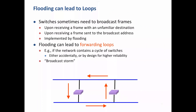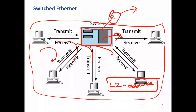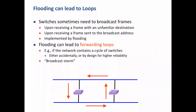When a destination node is not known, the switch is in a learning phase. If machine A is sending to C and the switch doesn't know where C is connected, it will replicate the packet and send it to all links — this is called broadcast. If switches are not connected properly, the same packet may circulate infinitely, causing flooding. This is called a broadcast storm.